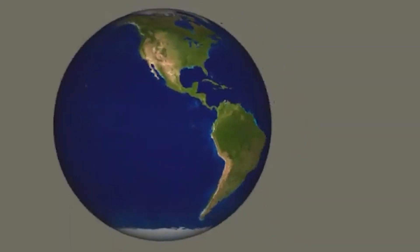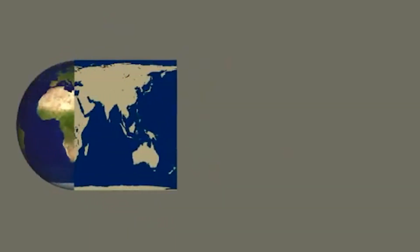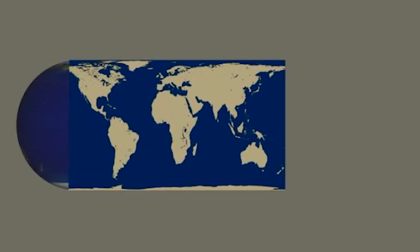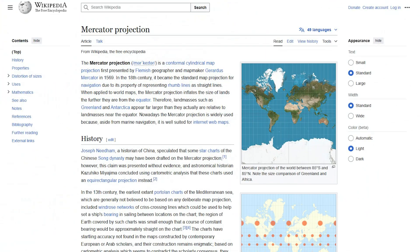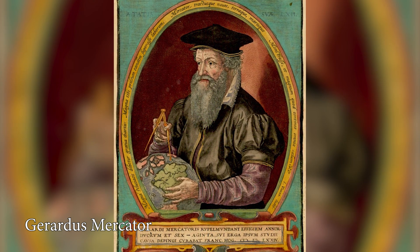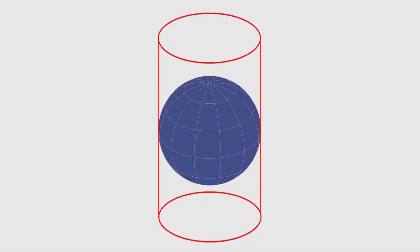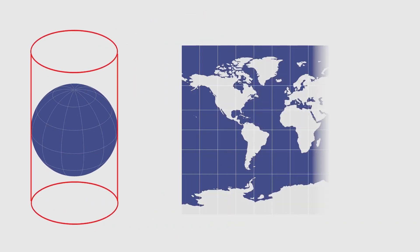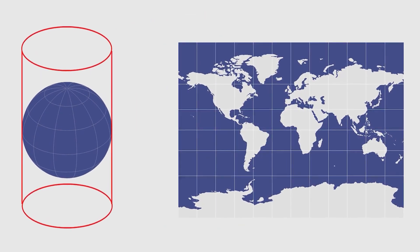The extent and nature of this distortion depend on the type of map projection used. A map projection is a method for flattening Earth's curved surface to create a map. The most famous projection is the Mercator projection, created in 1569 by Flemish cartographer Gerardus Mercator. It works by wrapping a cylinder around the Earth and projecting every point on the globe onto the surface of this cylinder. Once the cylinder is unwrapped, you get a rectangular world map.